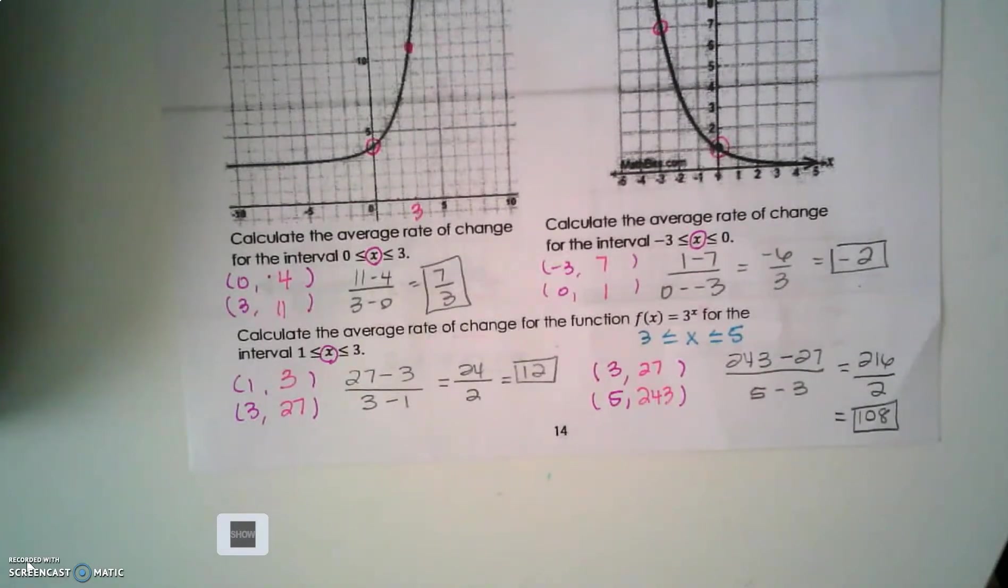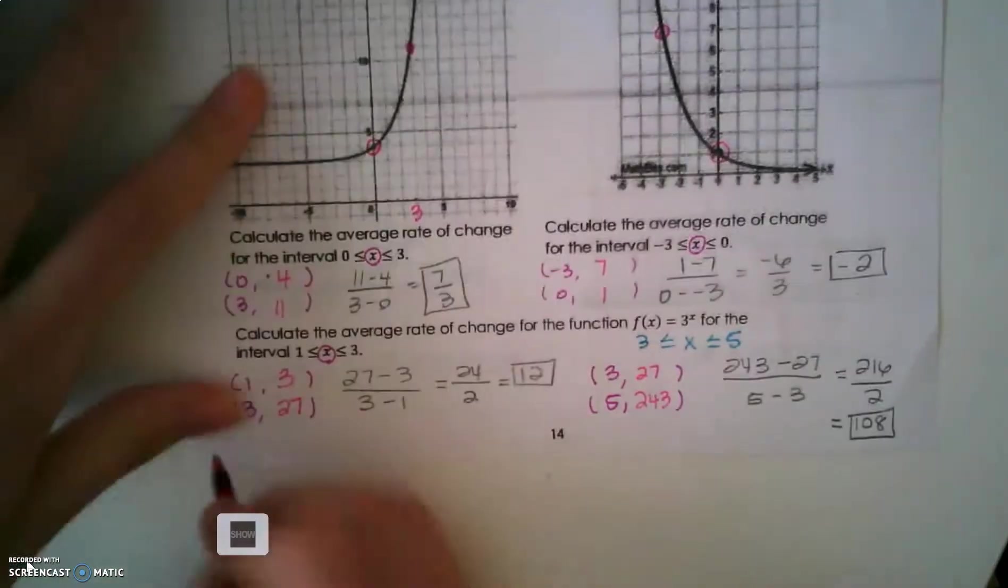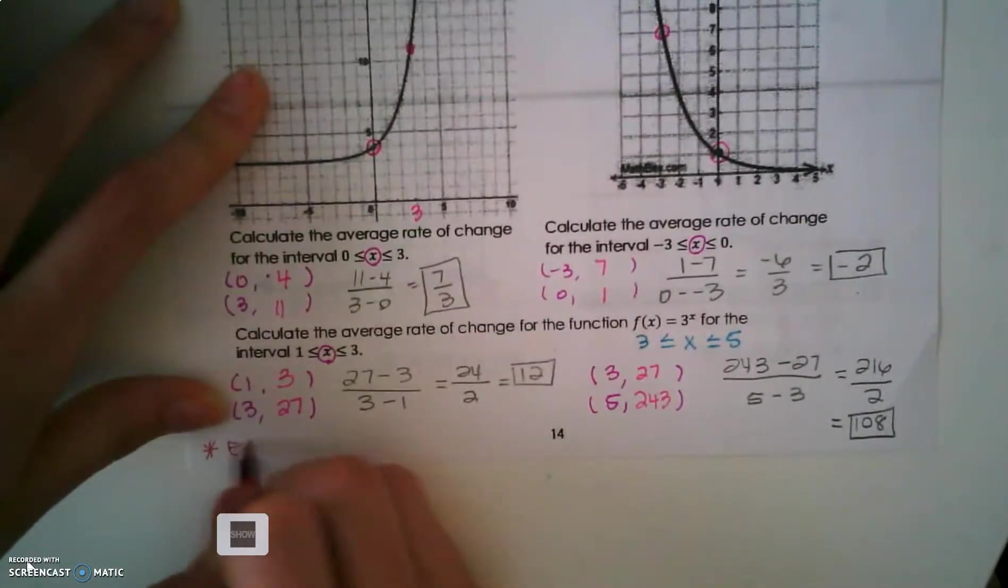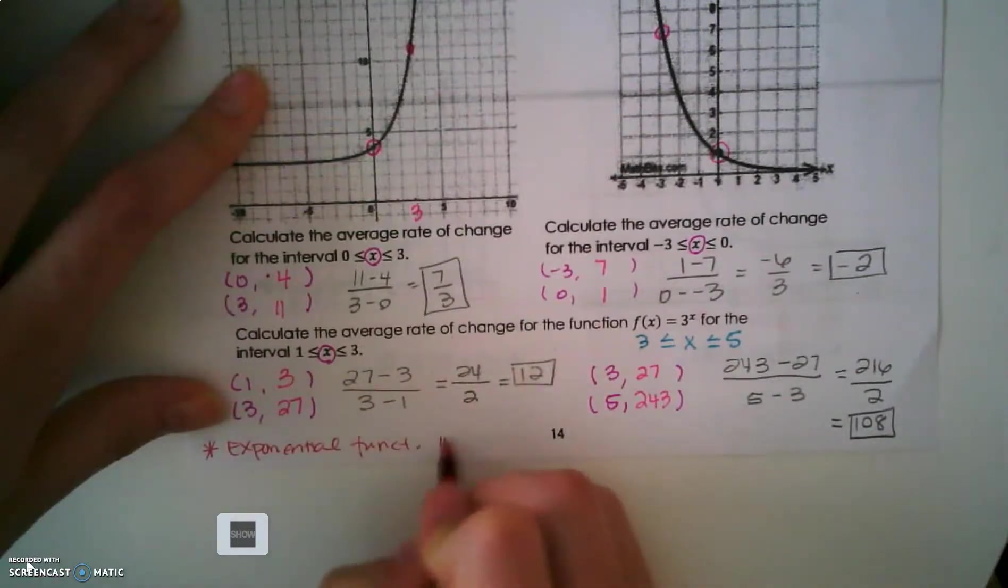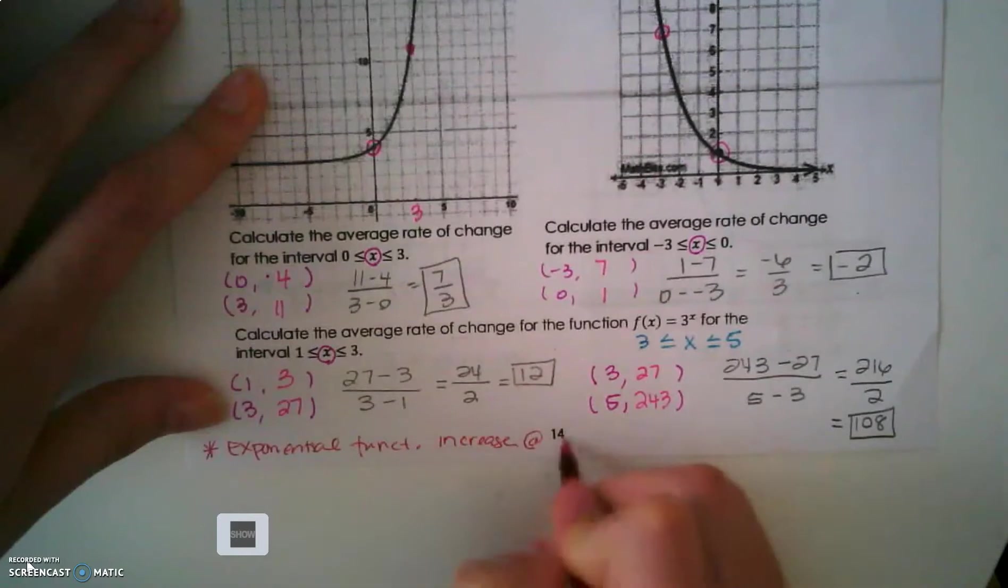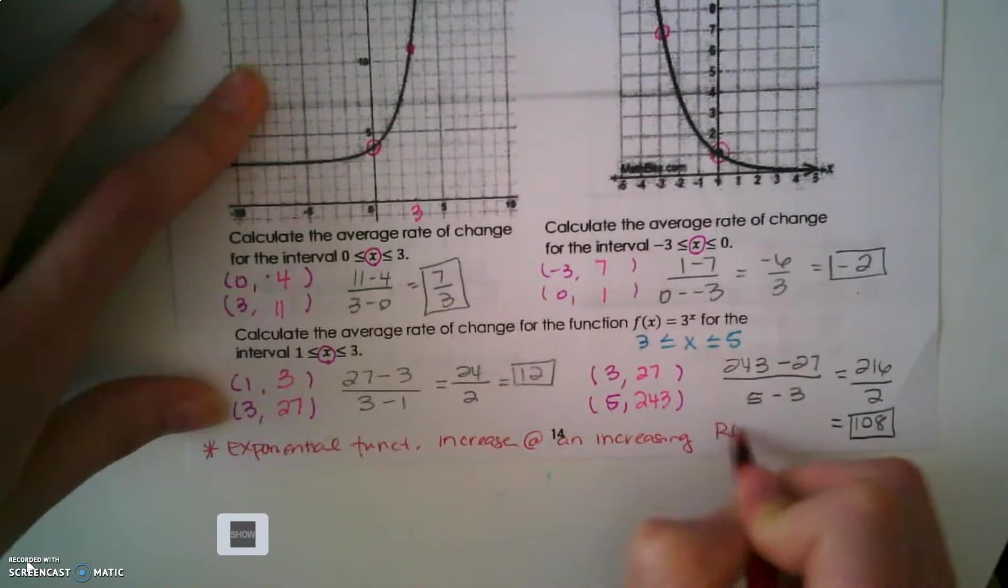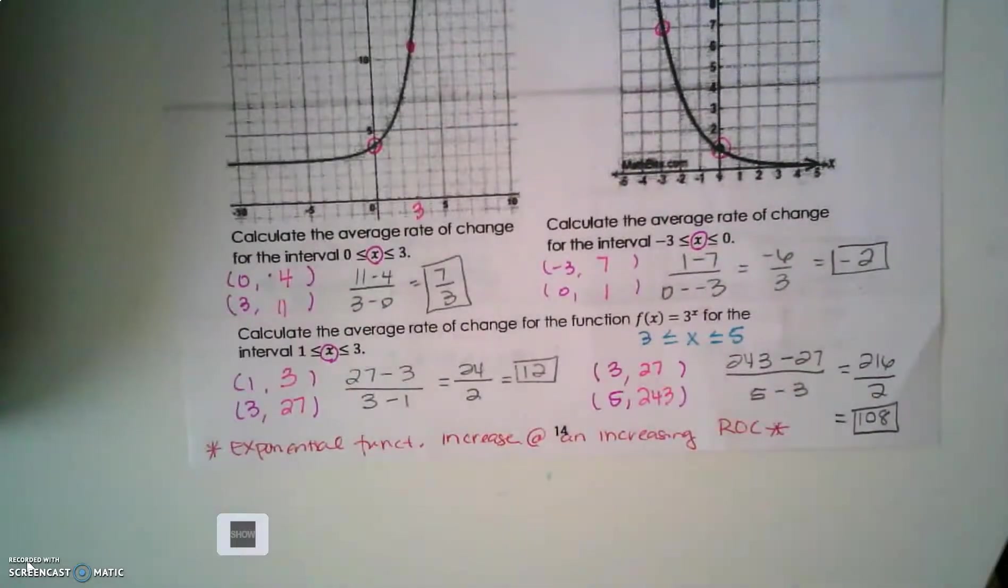What is the only constant function, constant slope, that I will have? Linear functions. Linear functions are the only constant slope. Exponential functions increase at an increasing rate of change. That's a huge fact. Exponential functions increase at an increasing rate of change.